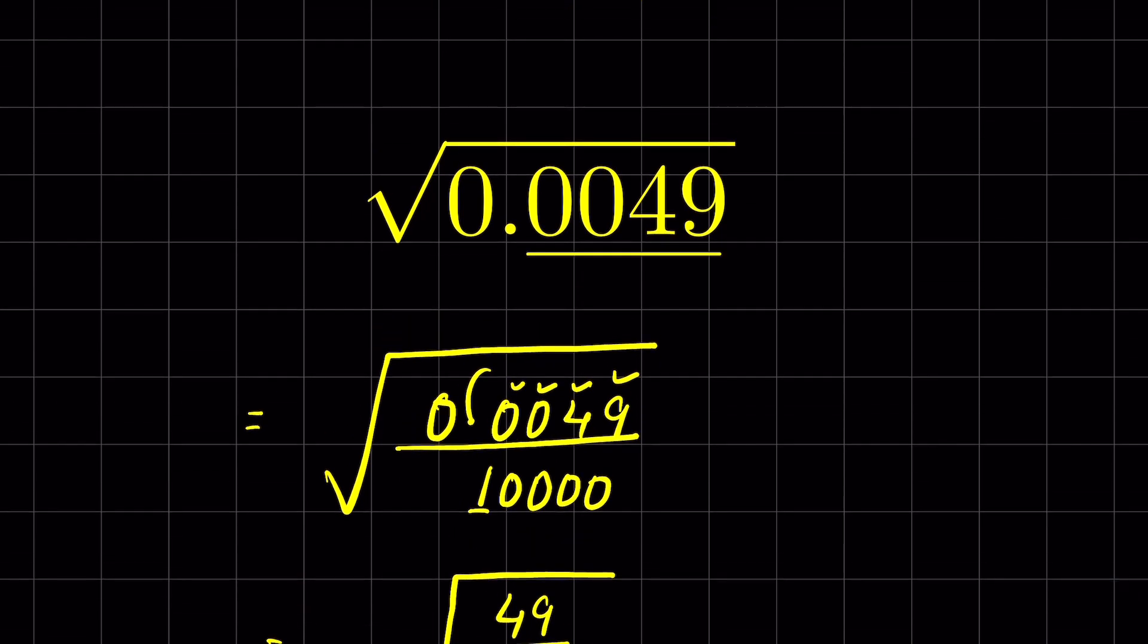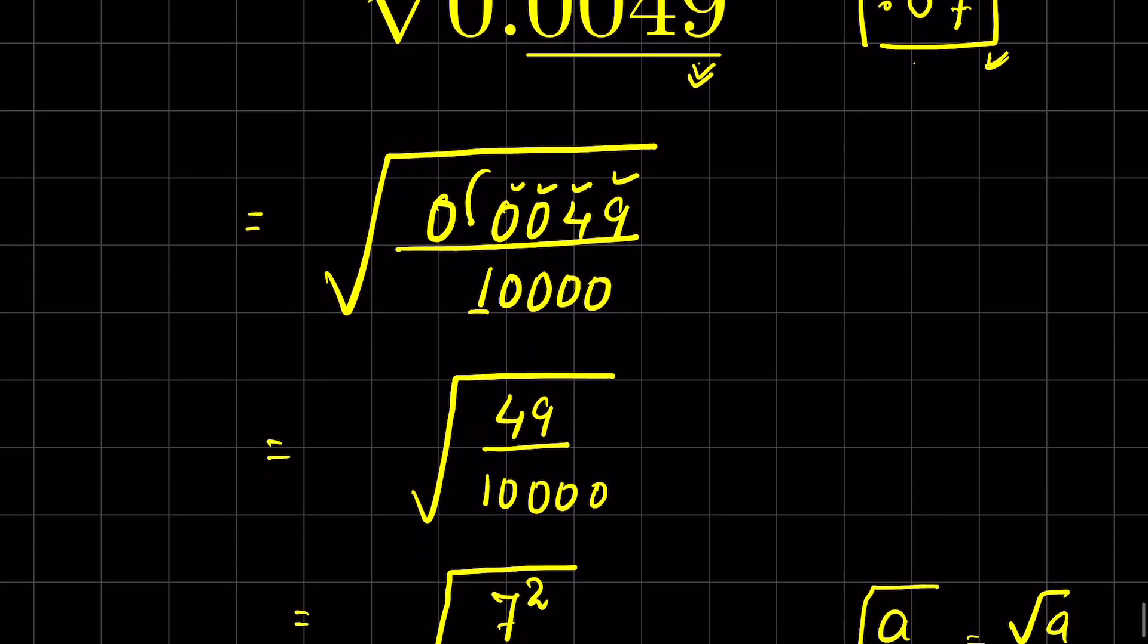Another method is, there are 4 digits after decimal and 49 is the square of 7. So we write 7 for 49, and then there are 4 digits after decimal. So when we remove the square root, there will be 2 digits after decimal. So it will be 0.07. This is the easier method, a trick method to solve square roots with decimal numbers.